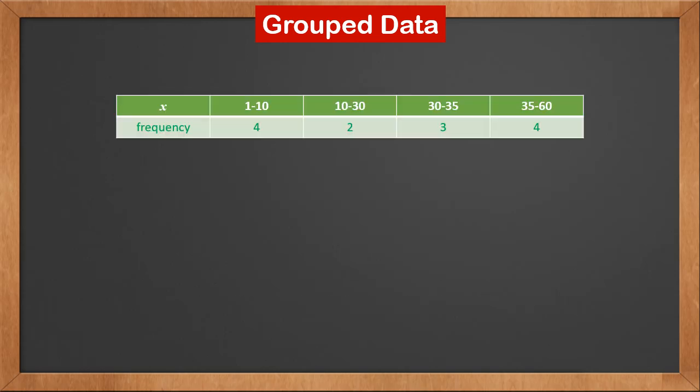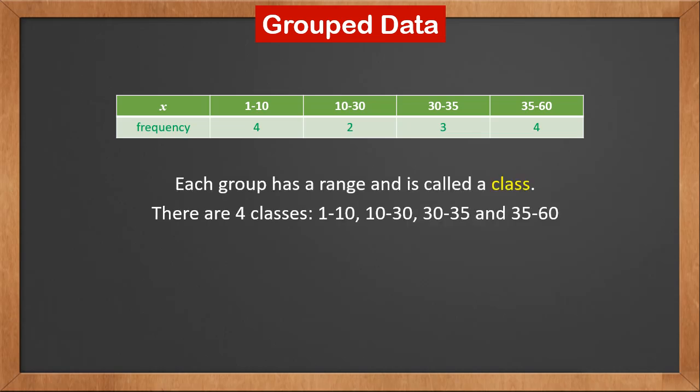This is another kind of grouped data where each group has a range. There are 4 values between 1 and 10, 2 values between 10 and 30, 3 values between 30 and 35, and 4 values between 35 and 60. The range is called a class, and there are 4 classes: 1 to 10, 10 to 30, 30 to 35, and 35 to 60.